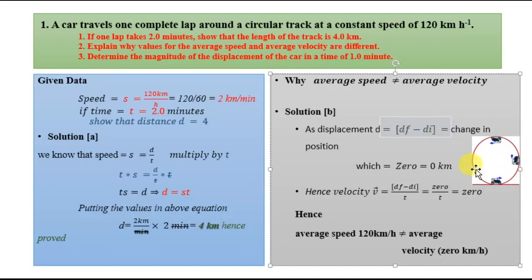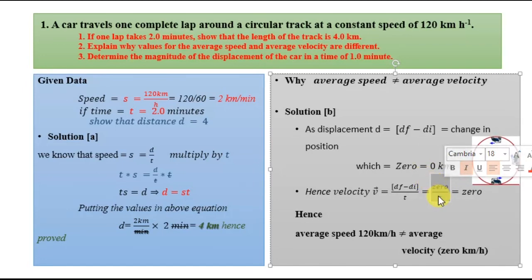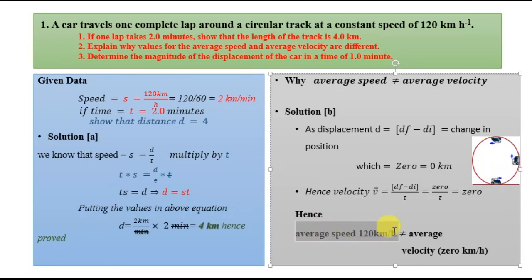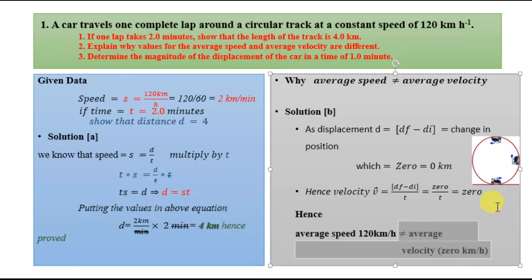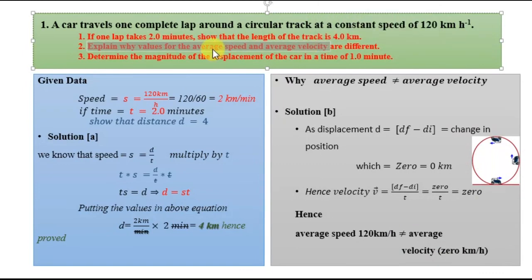The displacement equals the final position d_f minus the initial position d_i, which equals zero. The total displacement covered by the car is zero kilometers. Since velocity equals displacement divided by time, zero divided by any time equals zero. So the average velocity of the car is zero kilometers per hour, while the average speed is 120 kilometers per hour. Since 120 is not equal to zero, we have proved this statement.